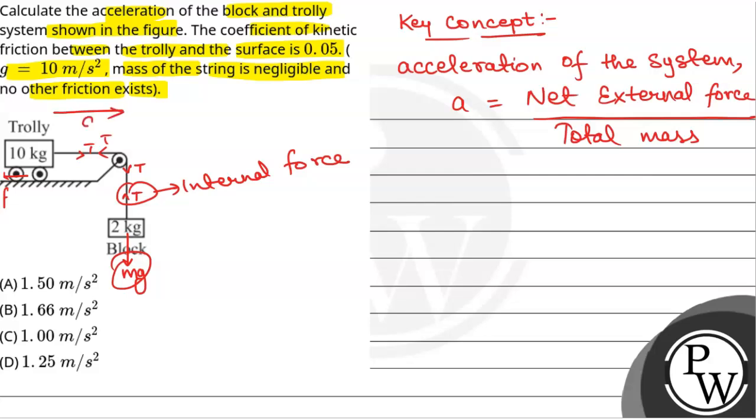Now, if we assume the acceleration of trolley is a and that of block is also a, the acceleration of block will be downward.